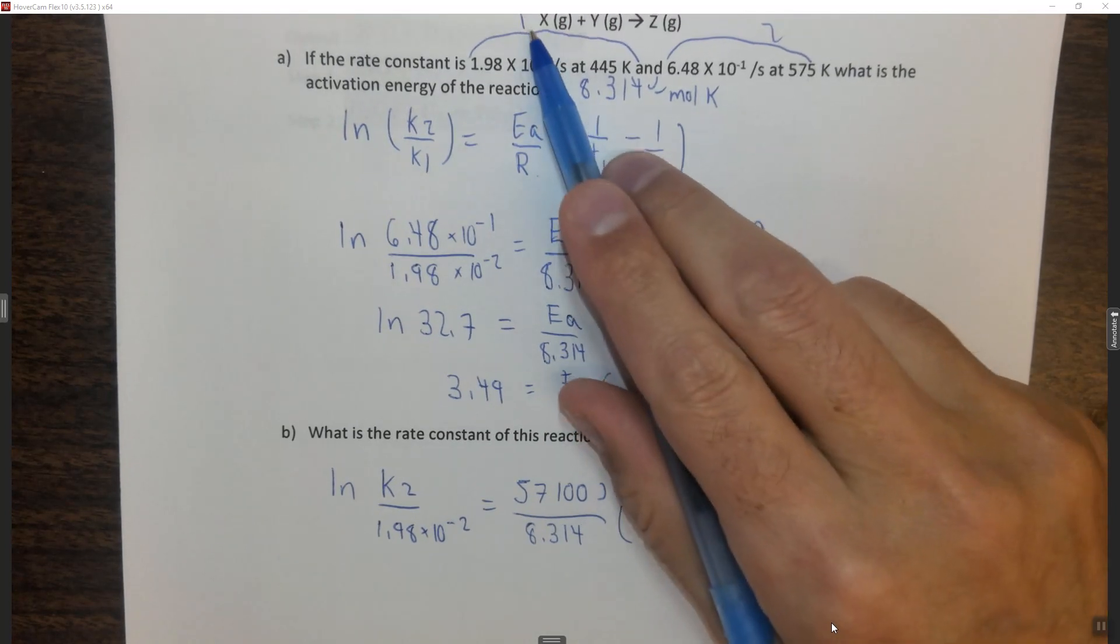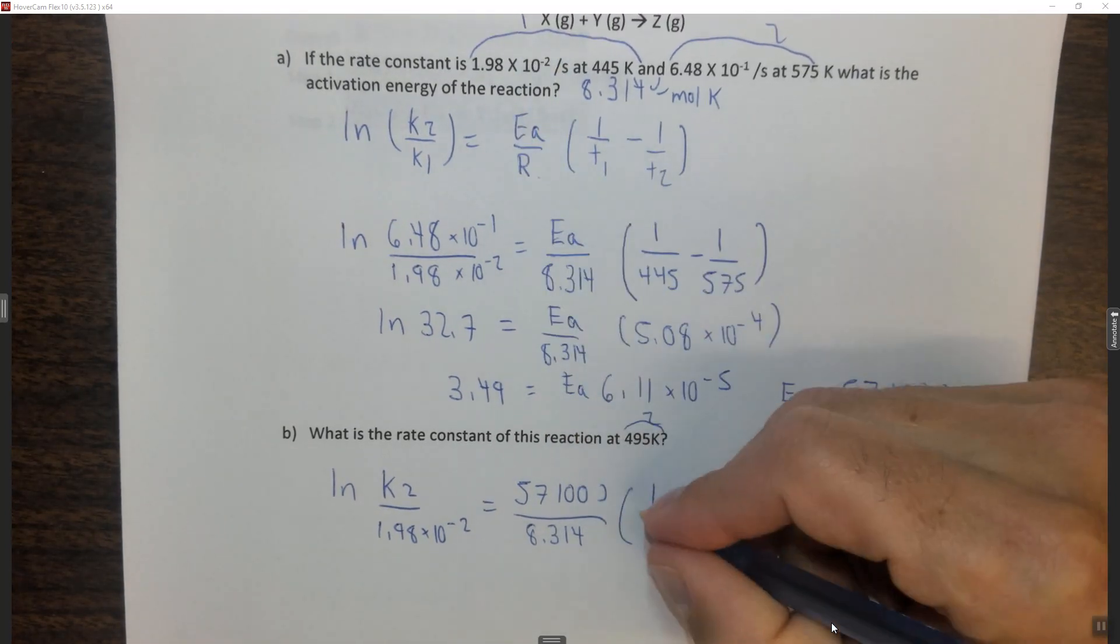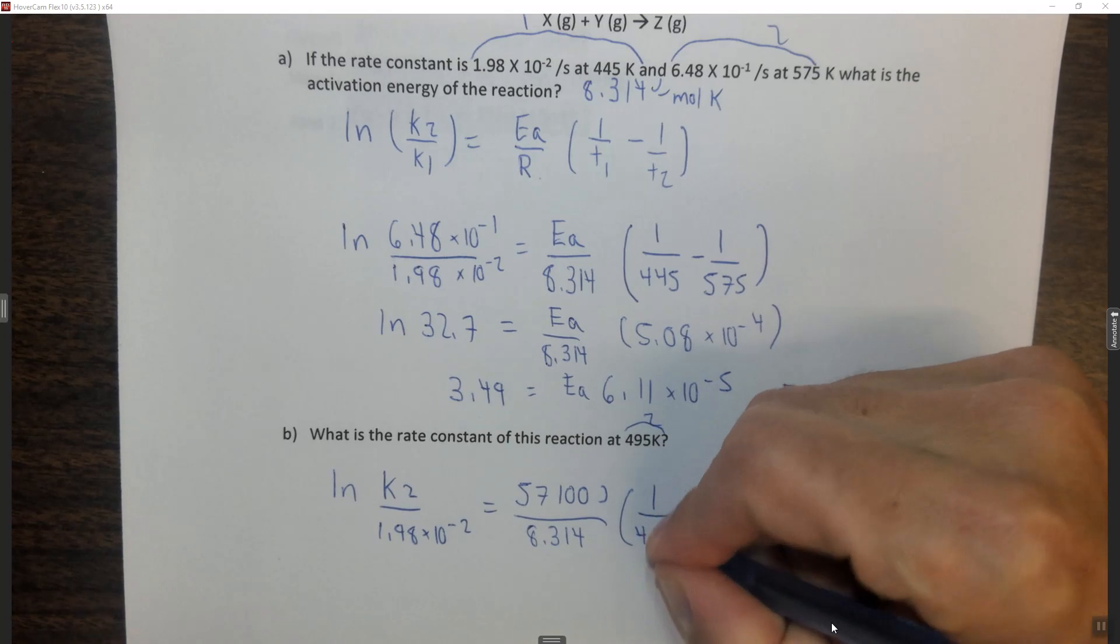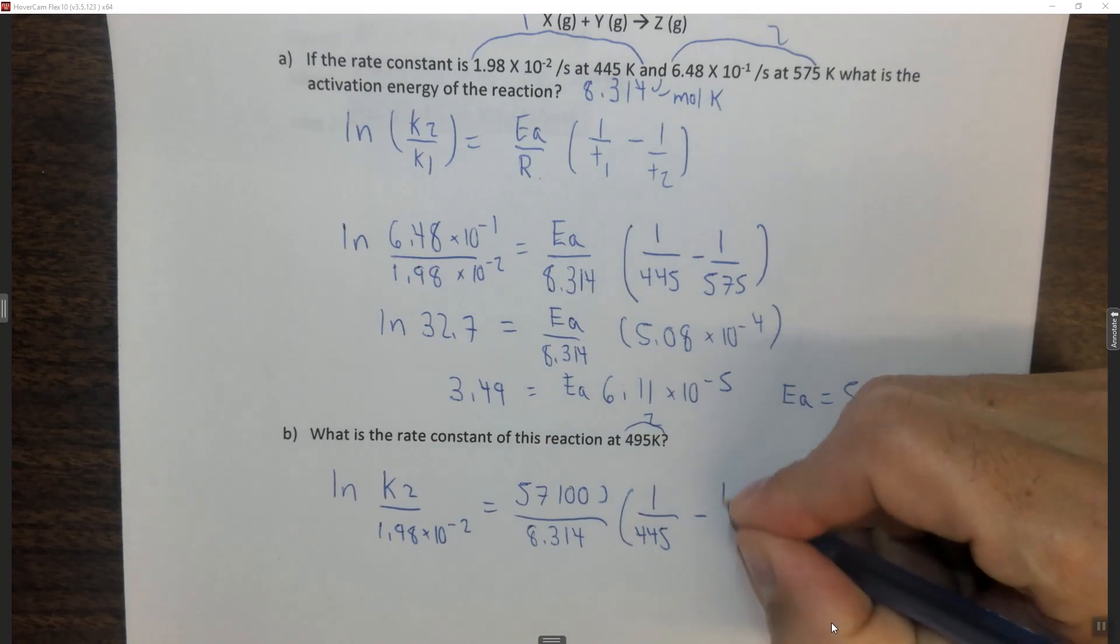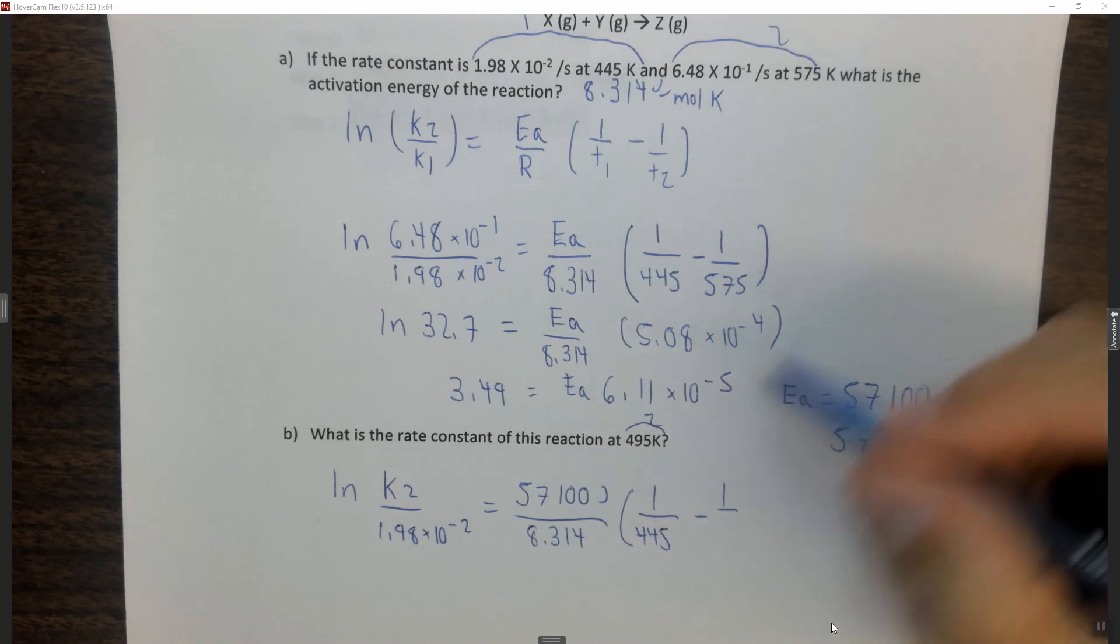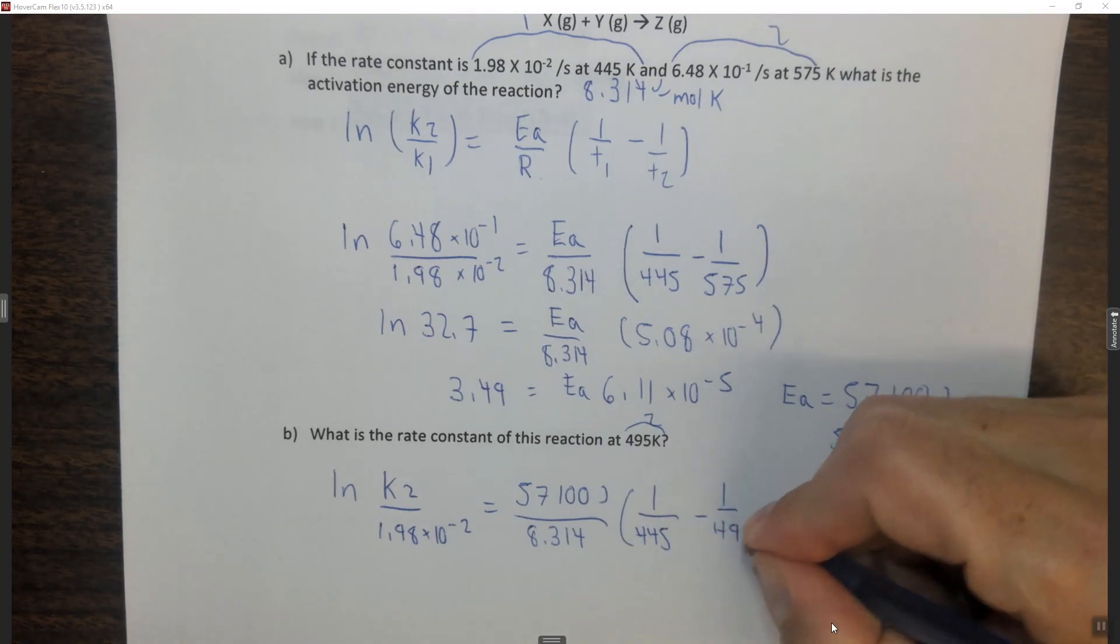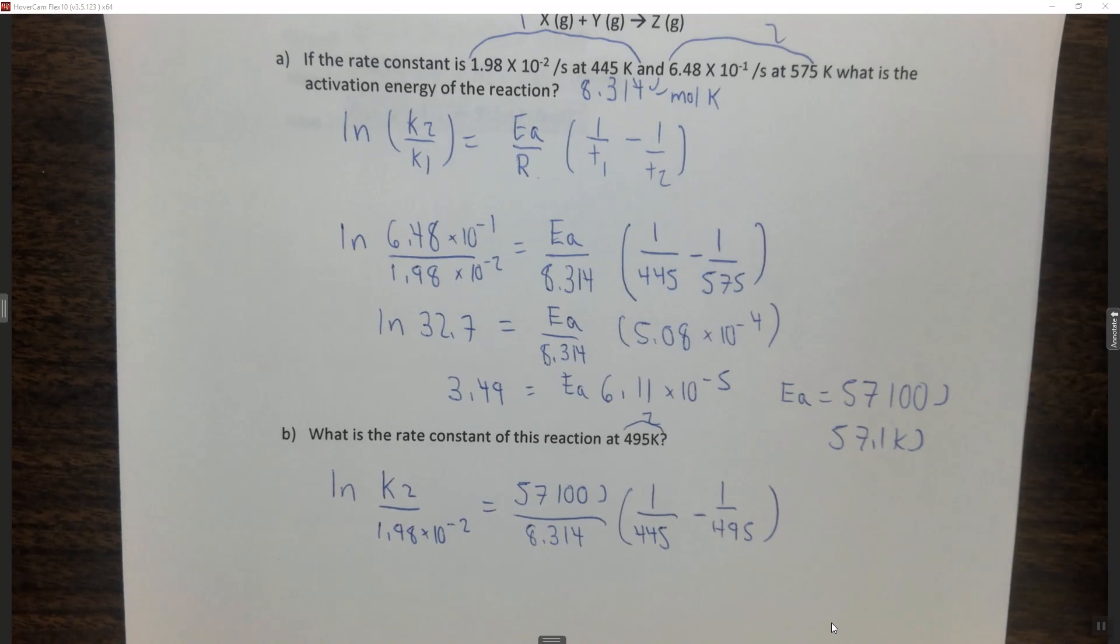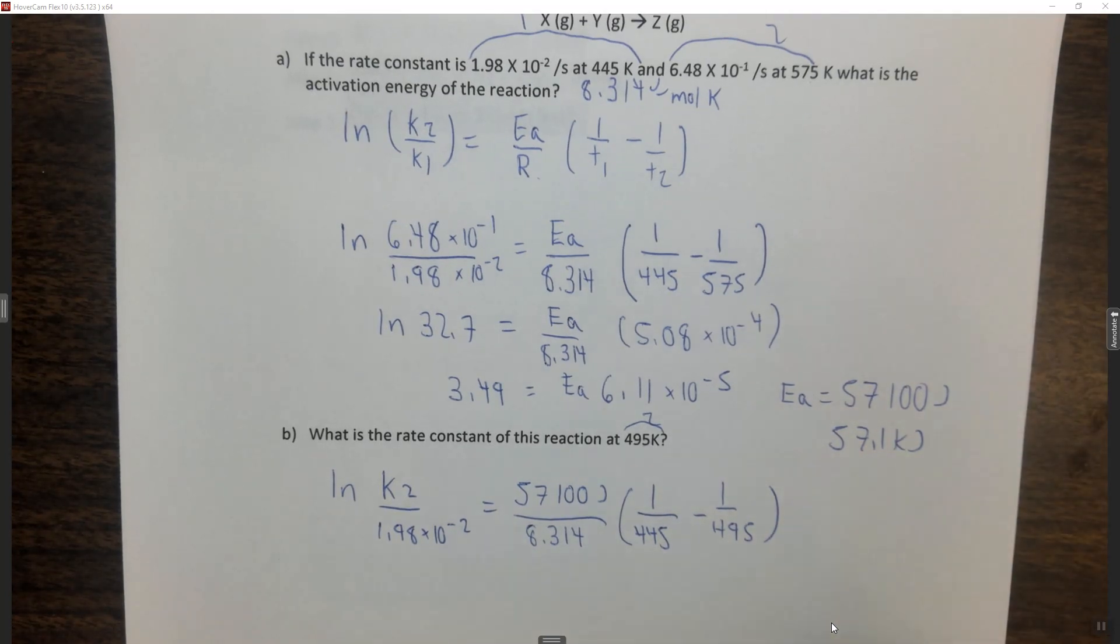On the bottom, 8.314 joules per mole K times 1 over T1. Again, I'm going to call this 1, you can't see it there, but that's the 1. So T1 is 445K minus 1 over T2, and T2 is going to be what you have here in the new question, 495K. We can simplify this because it's all numbers.